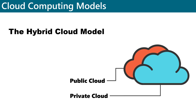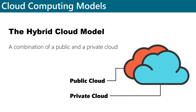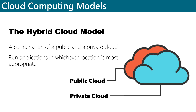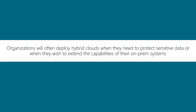A hybrid cloud is essentially a combination of a public and private cloud. A typical use case for a hybrid cloud would be a situation where an organization wants to host a public-facing website in the public cloud that connects back to a secure database that's hosted in the private cloud or even in an on-prem data center. Organizations will often deploy hybrid clouds when they need to protect sensitive data or when they wish to extend the capabilities of their on-prem systems.